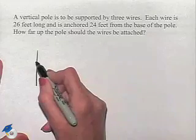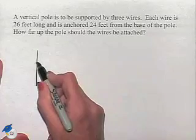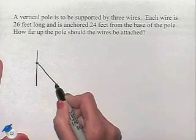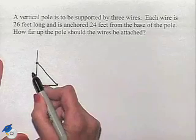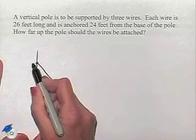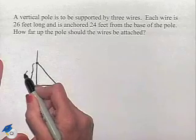We have an anchor where we're going to have the wire extending down from the vertical pole to the ground. We're trying to determine how far up the pole the wire is going to be attached, so we're going to call that X.